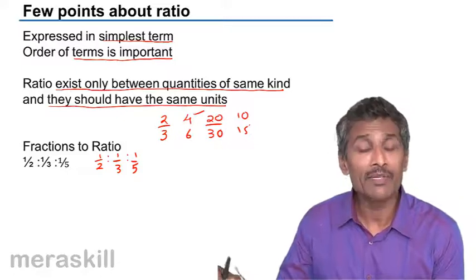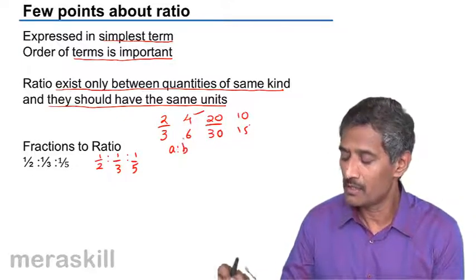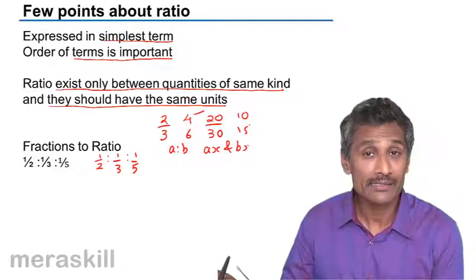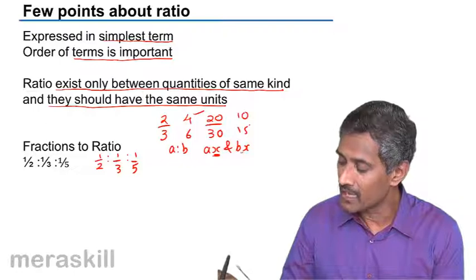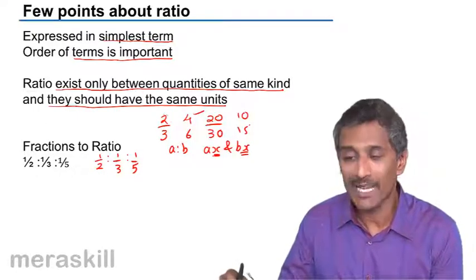Whenever you have two things in the ratio a is to b, we could take them as aX and bX, wherein X is the unknown ratio factor, common ratio factor.